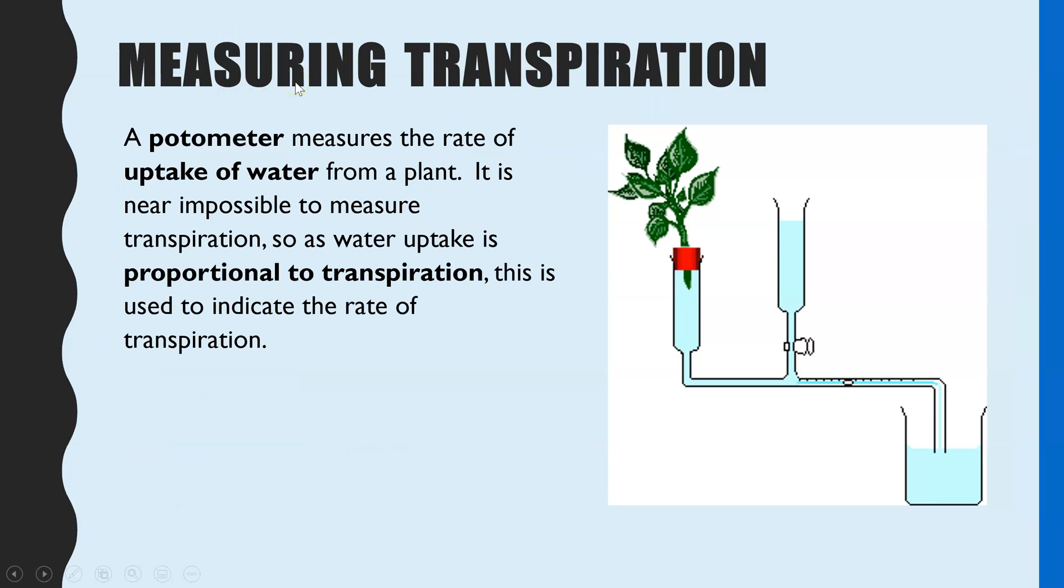How you can actually measure the rate of uptake of water to be a representation of the rate of transpiration is using this piece of equipment called a potometer. What potometers measure is how much water a particular piece of plant is taking up in a period of time. The reason that it's measuring uptake of water rather than transpiration is because it's near impossible to measure the rate of transpiration—it's water vapor coming out by evaporation, so it's very difficult to measure. Instead, because the amount of water that is taken up is almost the same as the amount of water which evaporates by transpiration, we take it to be that however much water was taken up is proportional to the rate of transpiration.